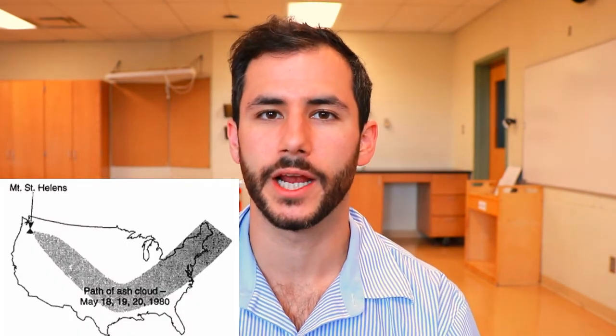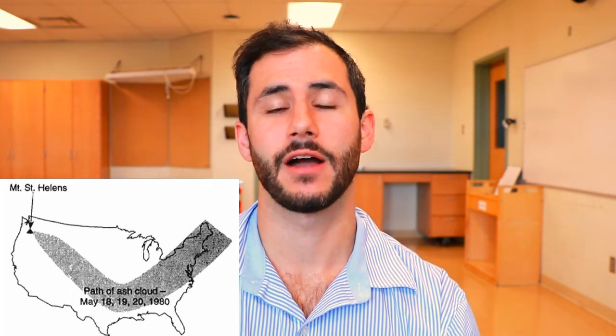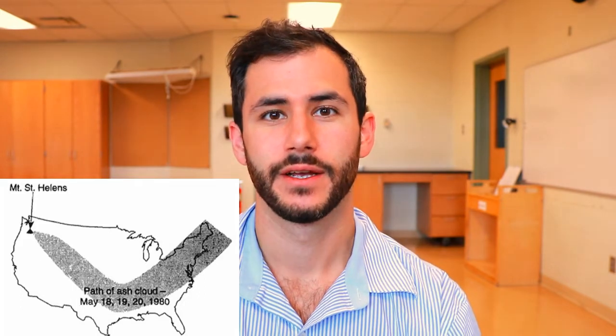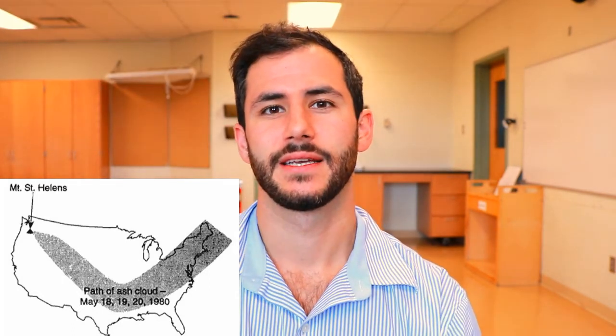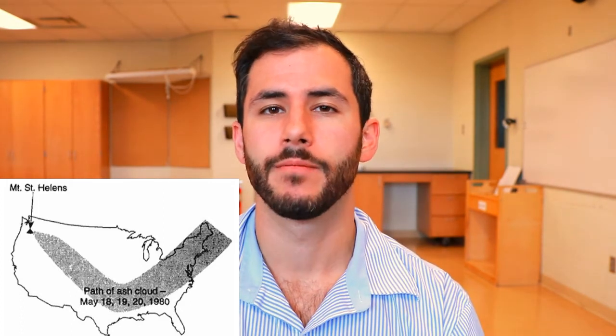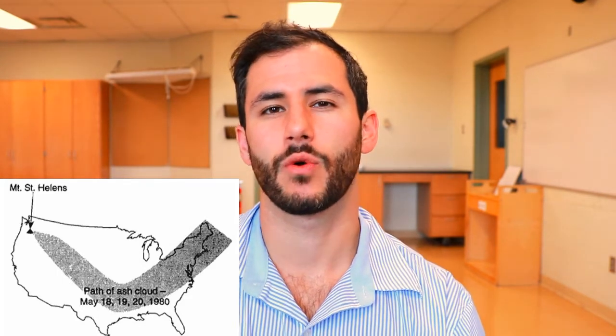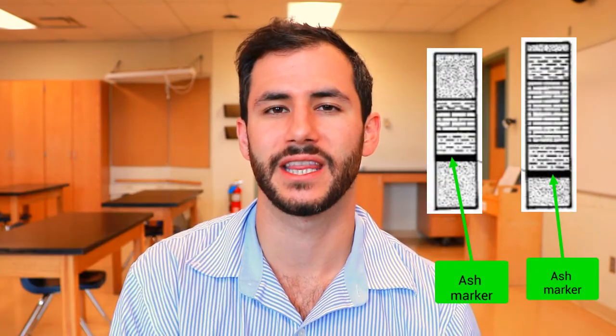Take a look at this map — it represents the path that the ash cloud traveled after the 1980 eruption of Mount St. Helens, stretching all the way across the entire United States. As that ash layer settles down and more rock is deposited on top of it, it leaves a sort of bookmark in time for that specific eruption and allows us to determine a lot of important information about the surrounding rocks. Although we're not using the 1980 eruption to correlate rock layers — because it takes a lot longer than 40 years to make rocks — it's not the first time a volcano has erupted and certainly won't be the last.